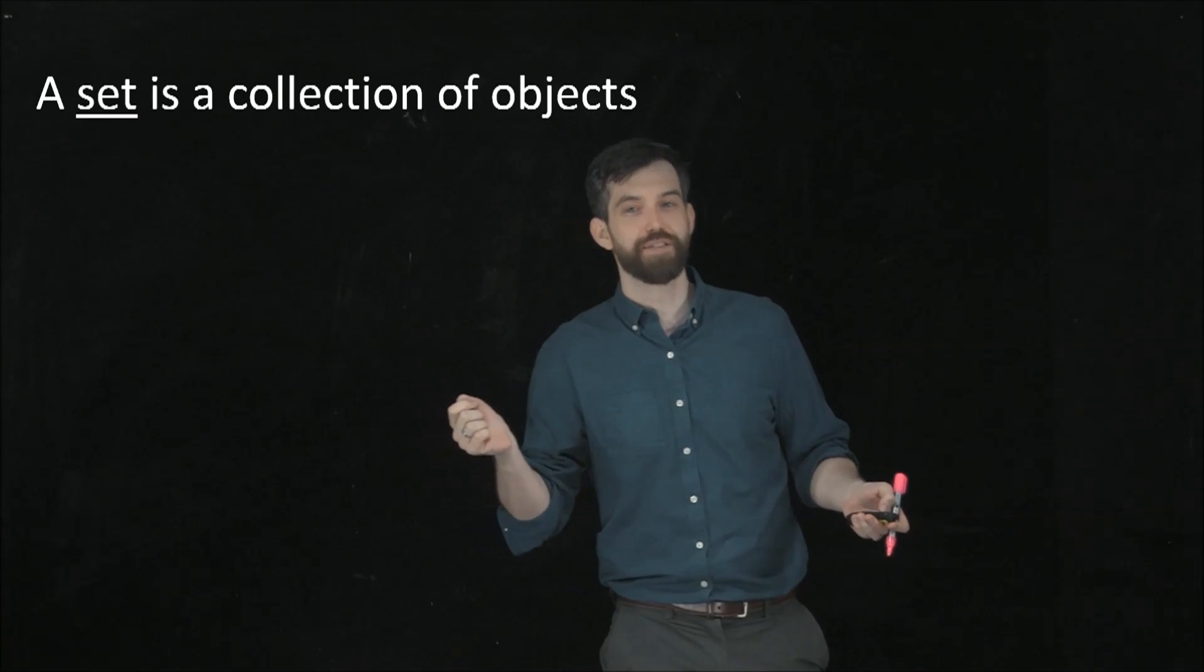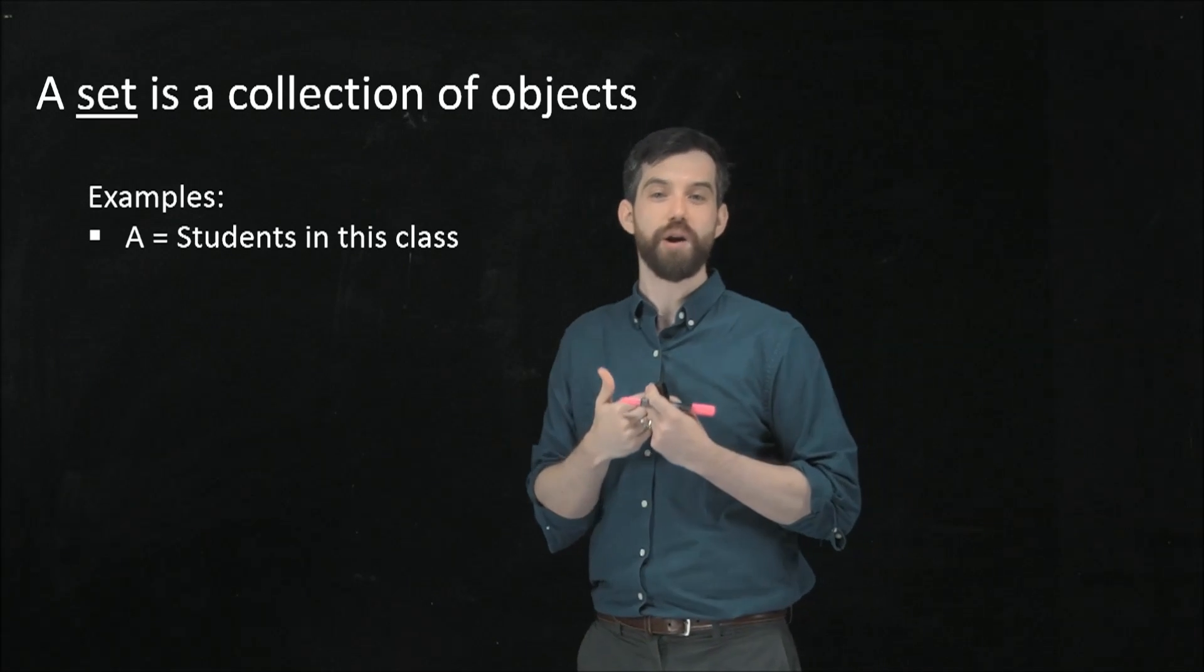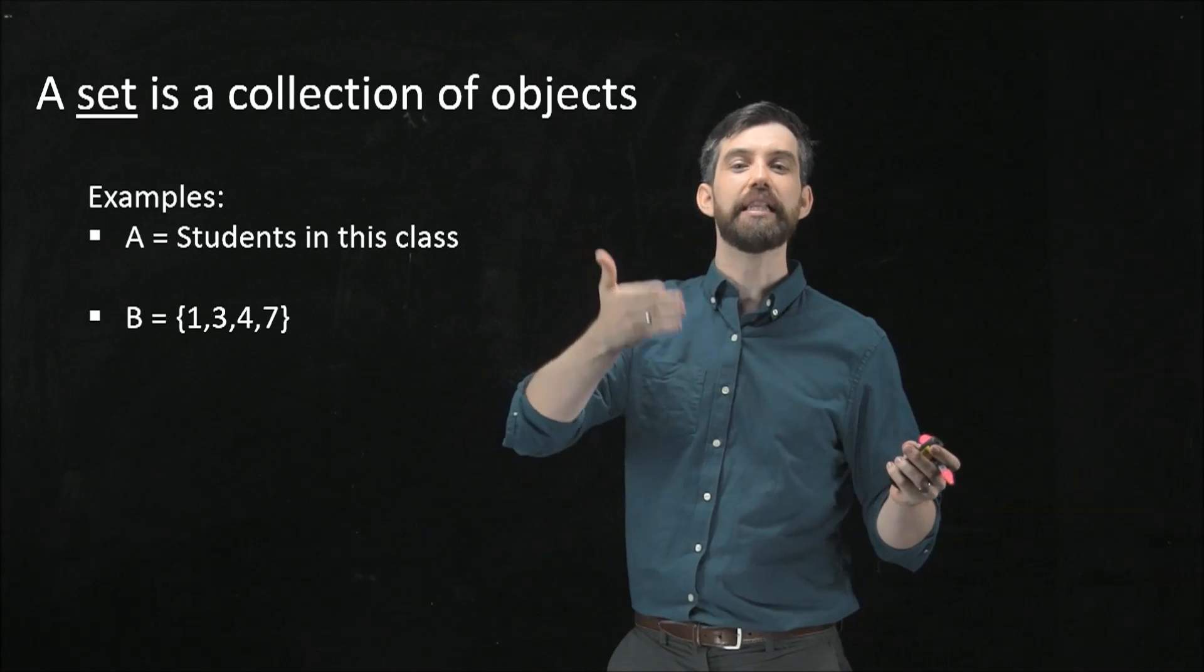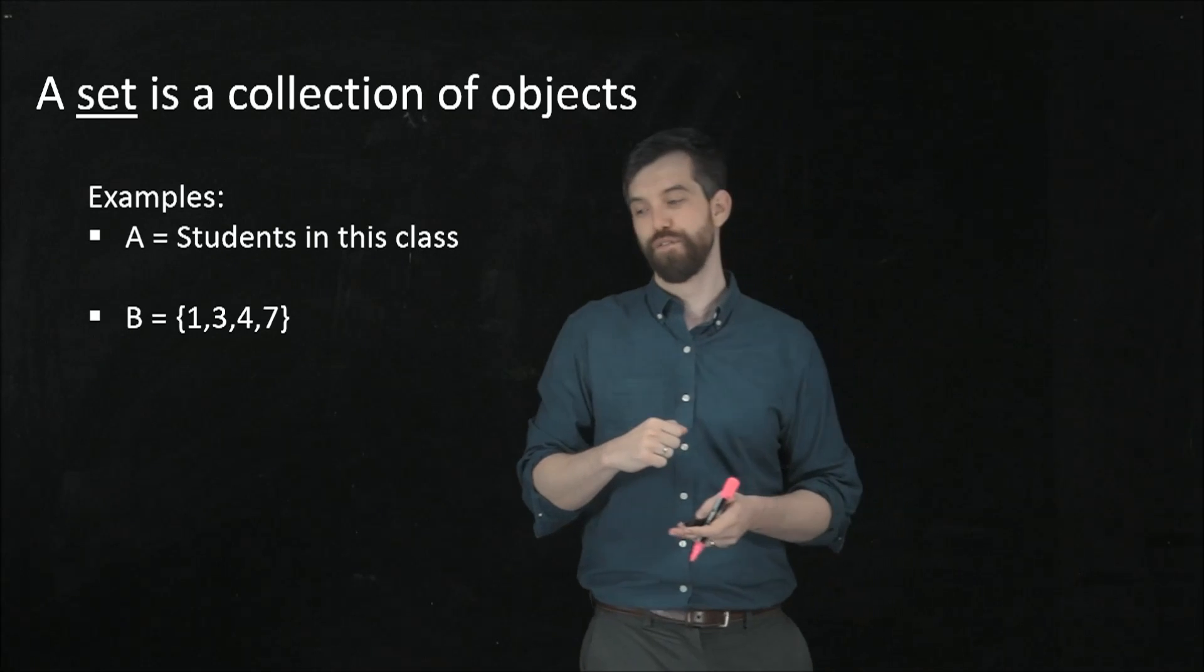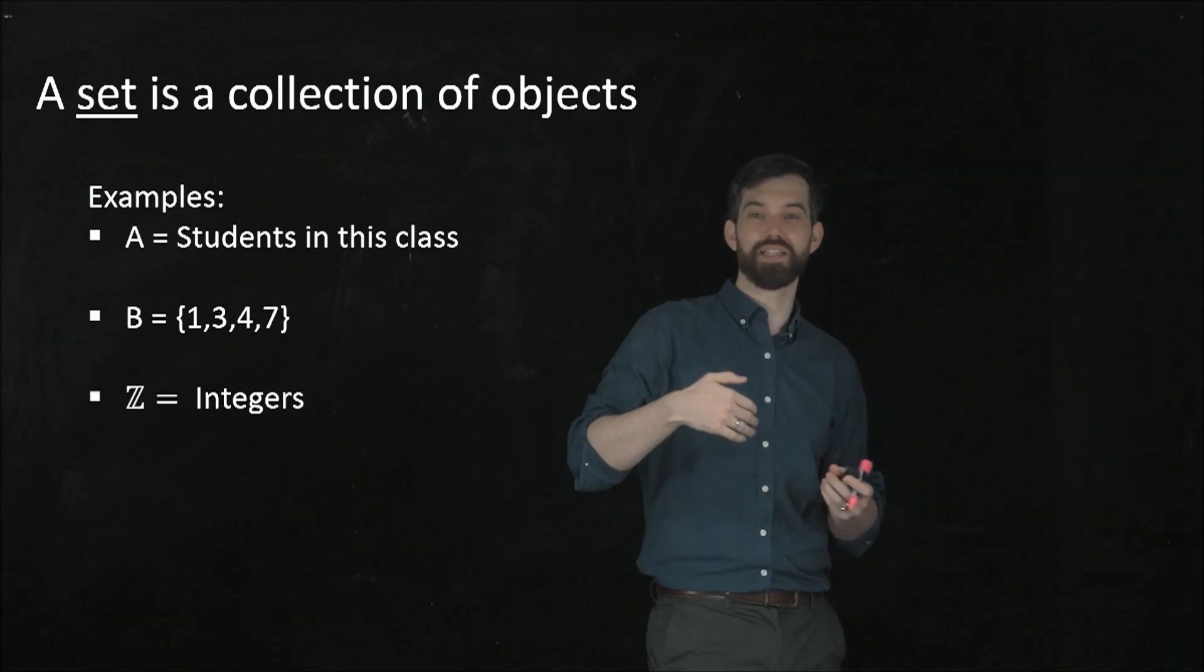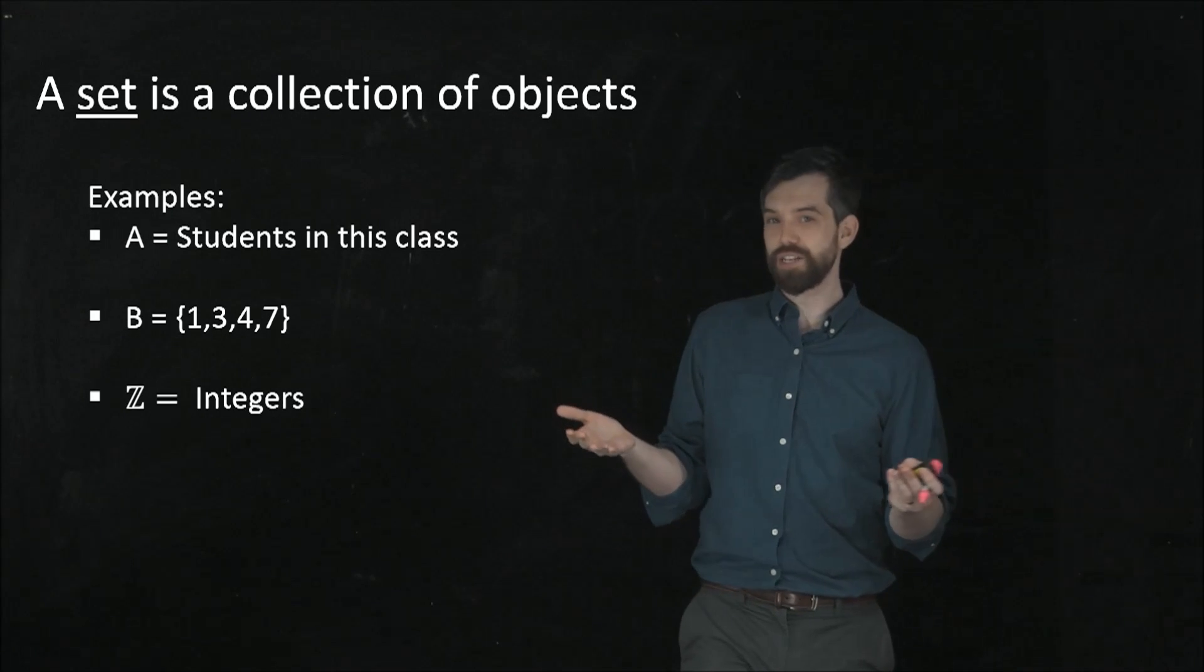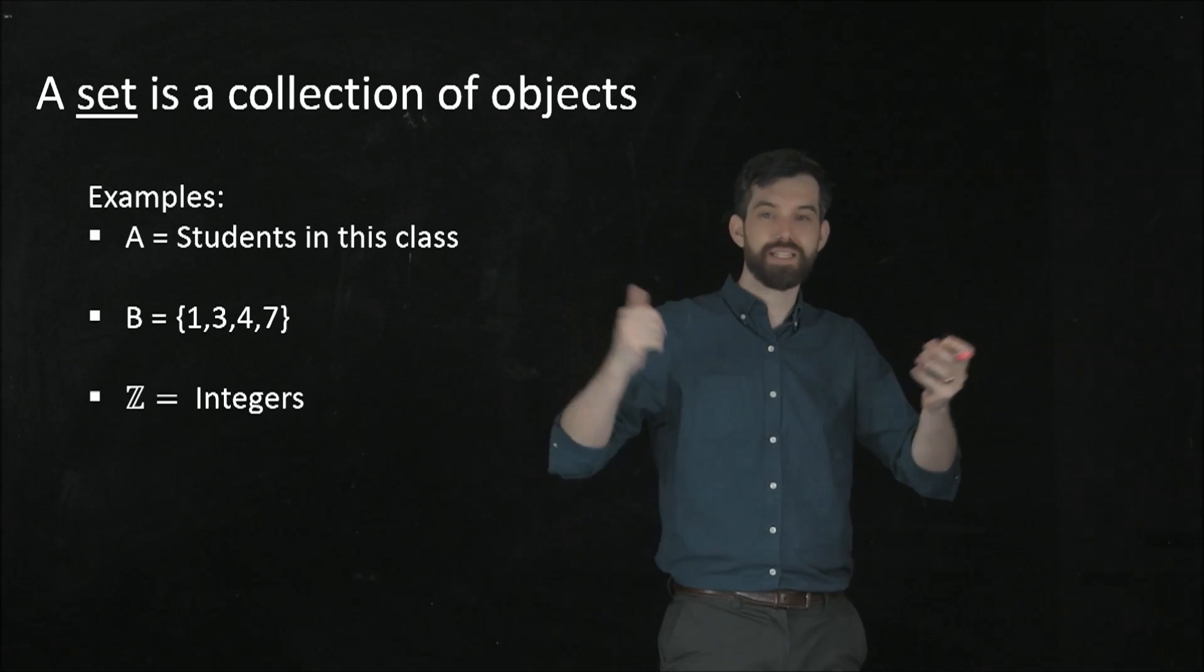Perhaps this is easiest to justify with an example. For instance, we can consider the set of students in a particular class, perhaps our class. We can also imagine a set that's just a bunch of different numbers. I use a sort of funny notation here, squiggly brackets. It just lists all the different numbers in the set. So this set B here consists of these objects: 1, 3, 4, and 7. One set you might be very familiar with is the set of integers. We've seen this before. These are numbers like 0, 1, 2, 3, and so on, as well as negative numbers: minus 1, minus 2, minus 3, and so on. Really, a set can be a collection of just about anything. You can sort of imagine it as being this bag, and then there's a whole bunch of different objects inside of that bag.